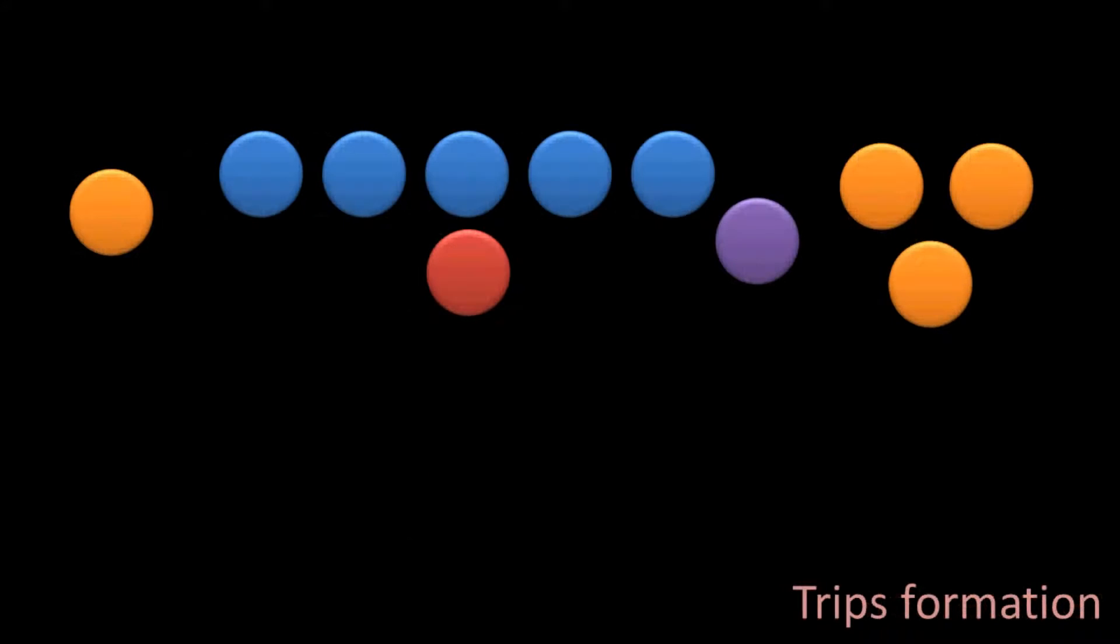The last formation that we'll look at with the quarterback under center is called the trips formation, which also uses three or sometimes four wide receivers. In the trips formation, three wide receivers will line up on the same side of the field. And possibly there will be a tight end over here too, so it can get pretty crowded and confusing for the defense as to how they're going to cover all of these receivers.